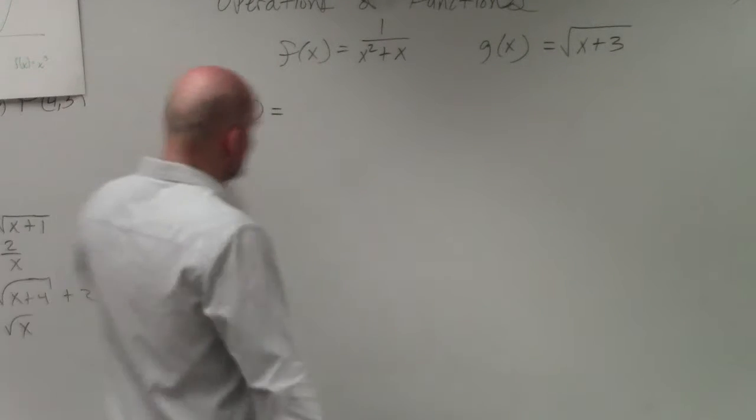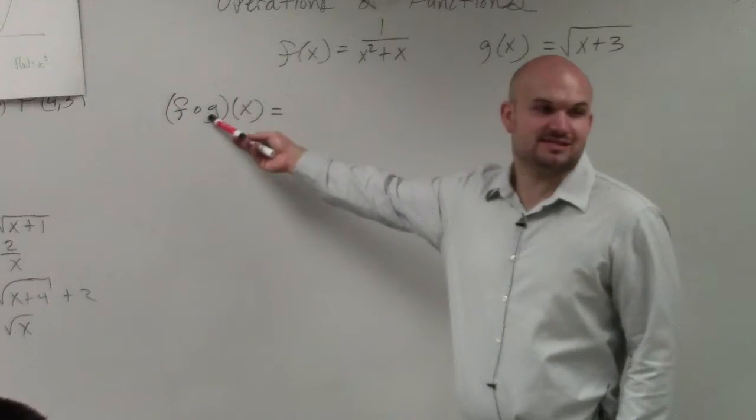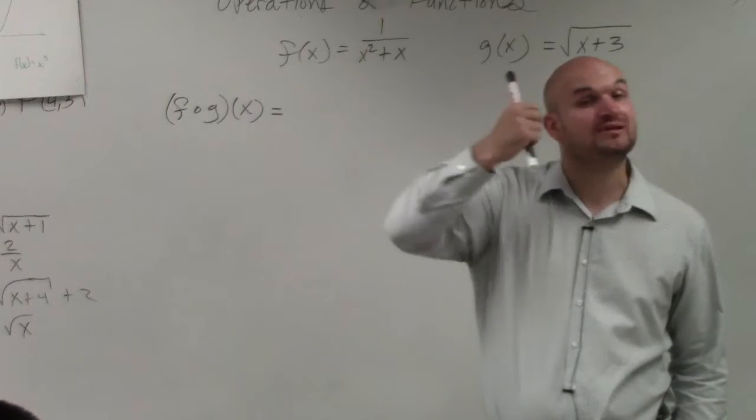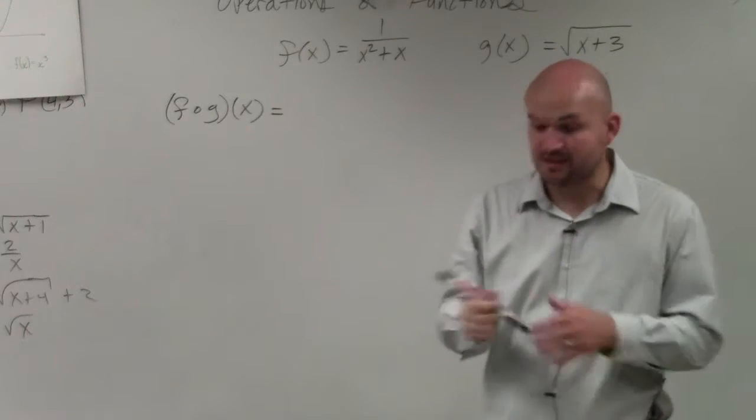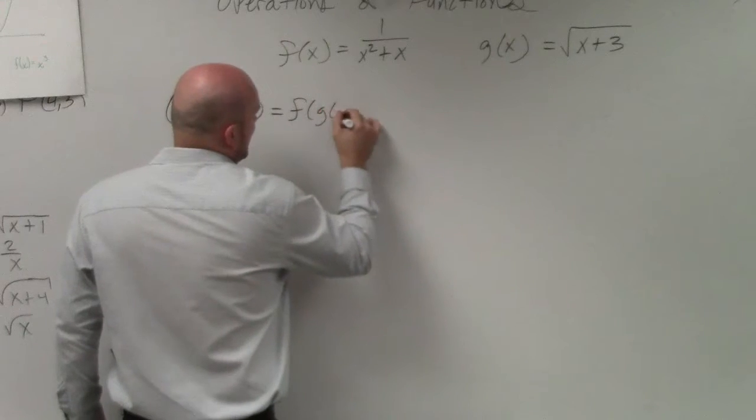So in this example, you guys might see this as this looks like f-o-g. But really, this little circle is not an O. It's a composition symbol. And basically, what it represents is f of g of x.